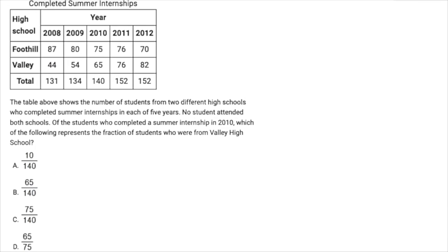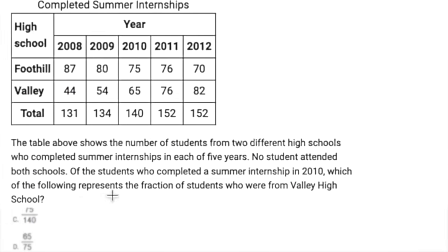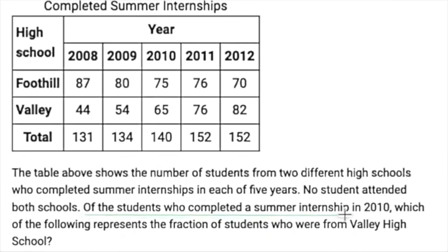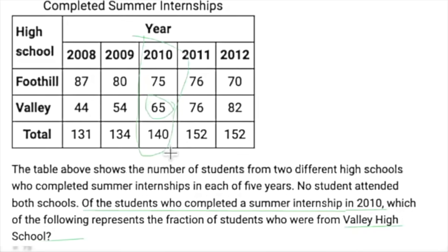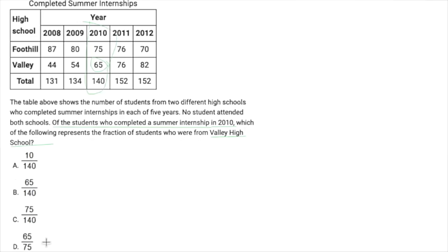Probability questions like this one are a great example of what I'm talking about. If I go to the main part of the question, of the students who completed summer internship in 2010, so I know I'm looking at 2010, which represents fraction who were from Valley High School. I find Valley. So then my answer would be 65 out of the total, 65 out of 140. So my answer is B. And I didn't have to read the rest of the question.